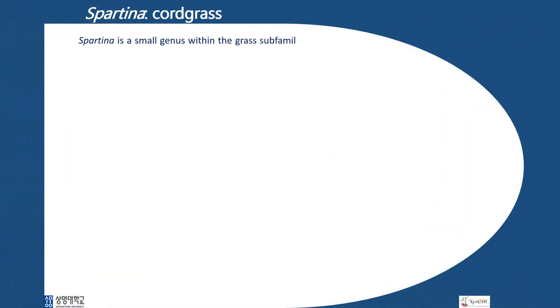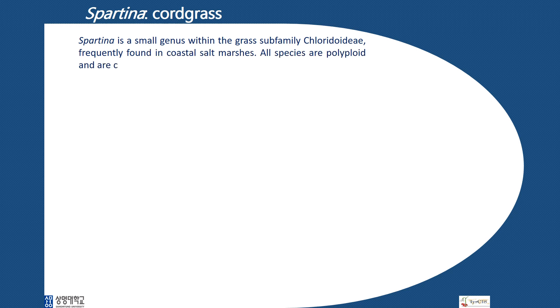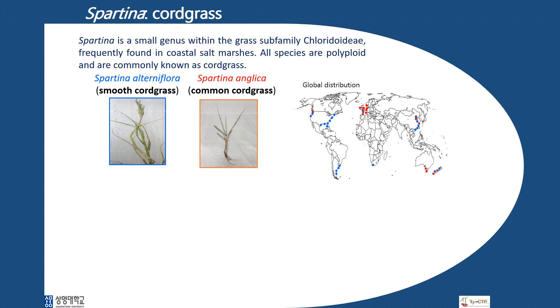Spartina is a small genus within the grass family Chloridoideae, frequently found in coastal salt marshes. All species are polyploid and are commonly known as cordgrass. Among the Spartina species, Spartina alterniflora and Spartina angelica are the most widely distributed globally.